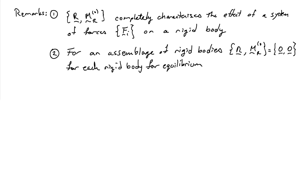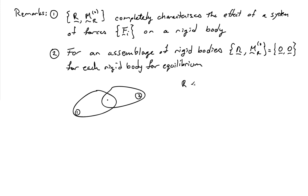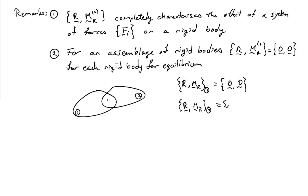If you have an assemblage of rigid bodies, the resultant force and resultant moment must equal zero for each rigid body individually for the system as a whole to be in equilibrium. For example, if two rigid bodies are connected by a pin — body one and body two — then the resultant moment and force on body one must equal zero, and the resultant moment and force on body two must also equal zero.